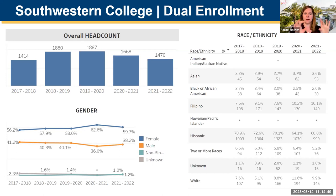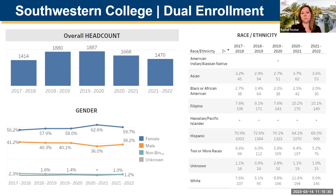One thing to notice is the gender participation: 60% female, 38% male — an equity gap we want to work on. Our race/ethnicity data for dual enrollment shows that with the help of the Community of Practice we've identified disproportionately impacted populations. Our Black/African-American students are one of those populations, along with our American Indian/Alaska Native and Hawaiian Pacific Islander populations. Even where numbers are small, we can internally see the data showing those groups are disproportionately impacted.